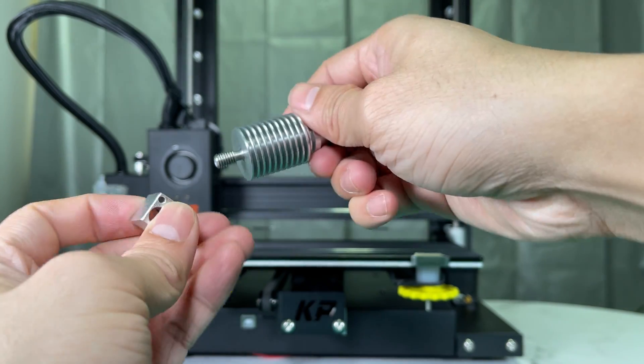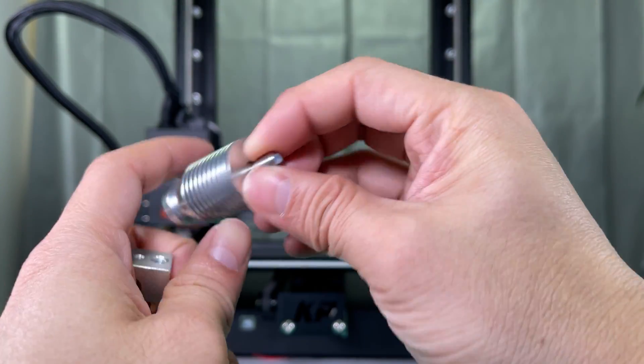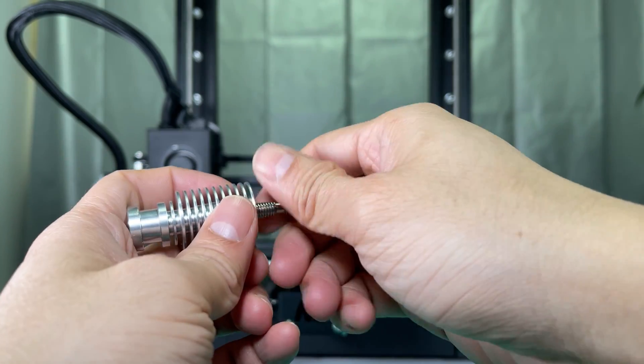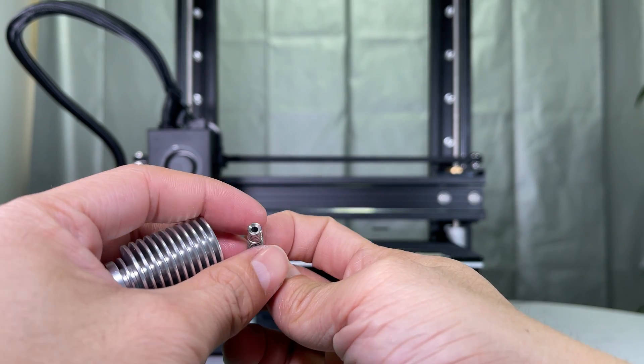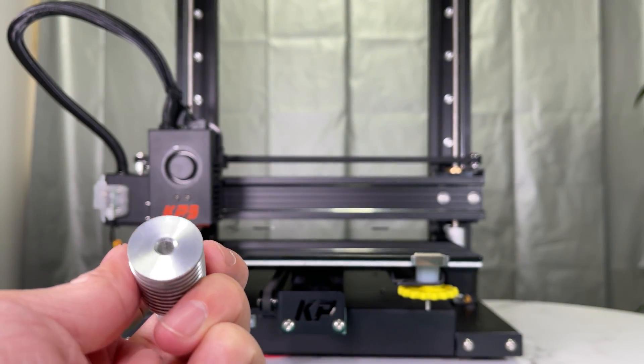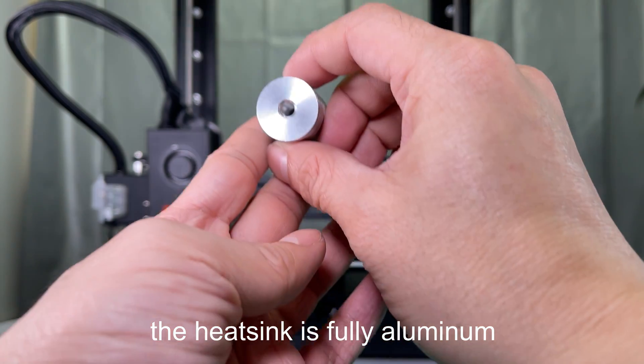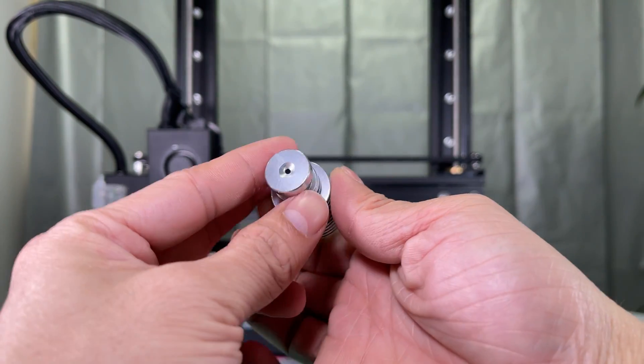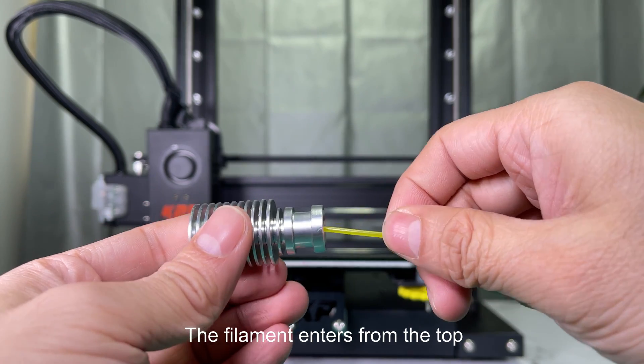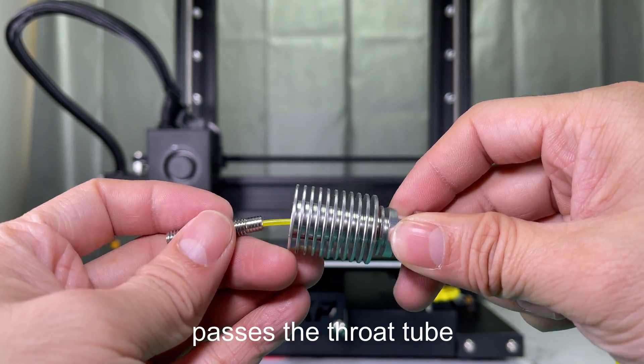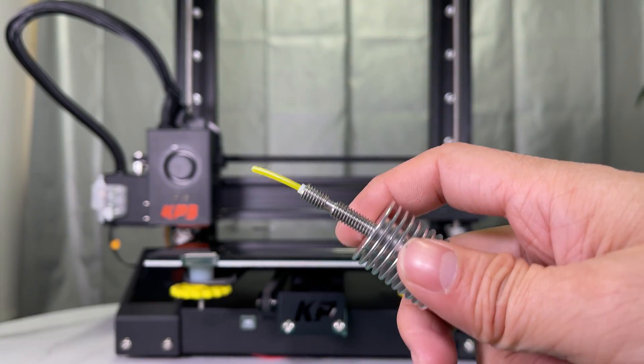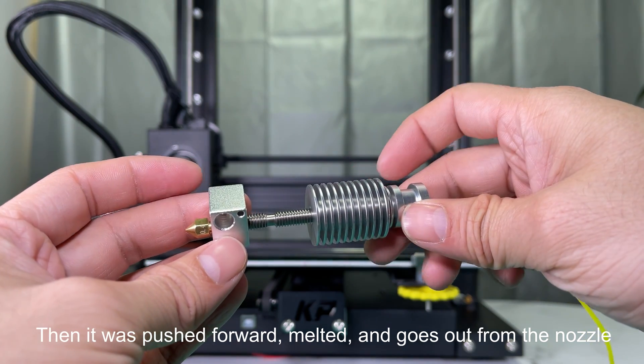Let's check its structures. There is a throat tube inside the heatsink. Let's take it out. Another tube inside the throat tube. The heatsink is fully aluminum. So does the heat block. The filament enters from the top, passes the throat tube, and is protected by the internal PTFE tube. Then it was pushed forward, melted, and goes out from the nozzle.